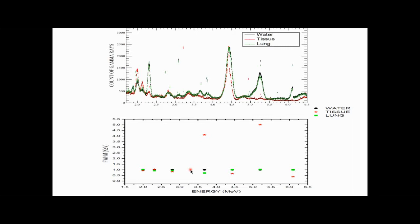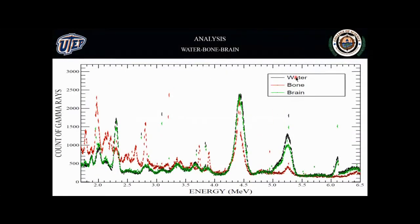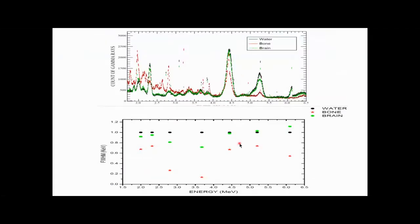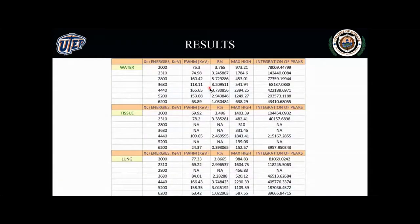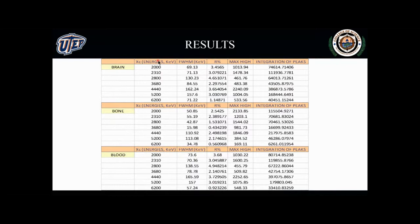This is just to show you the type of study — I'm not going into details because of the time. Basically, we found differences between body materials, and we didn't find the differences fitting any specific distribution. We ended up comparing 11 materials at seven energies and looking at four parameters. This is just to show you all the things that we evaluated: numbers for different elements, the seven peaks, the full width at half maximum, the R, the maximum height, and the area under each of the peaks, and how we can compare those to each other.